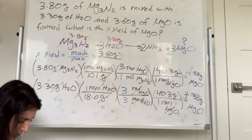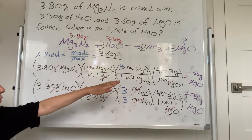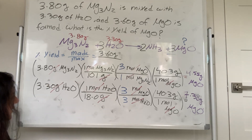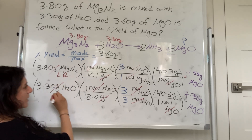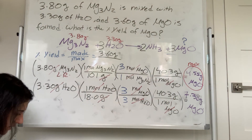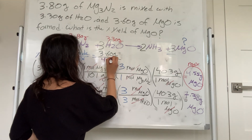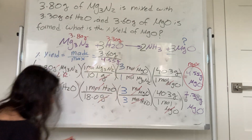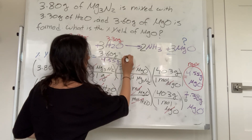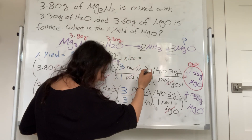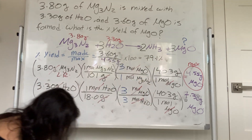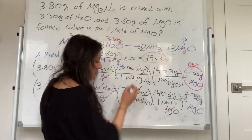Based on magnesium nitride: 4.55 grams of MgO. Based on H₂O: 7.38 grams. My limiting reagent is magnesium nitride, so the max I can make is 4.55 grams. Percent yield = 3.60 g made / 4.55 g max × 100% = 79.1%. That's my percent yield — not bad, you'd keep your job.